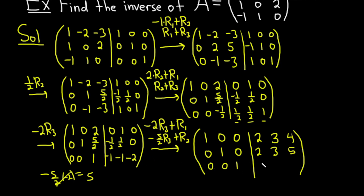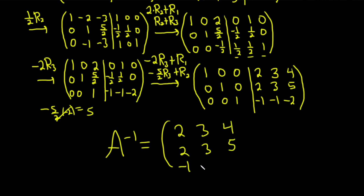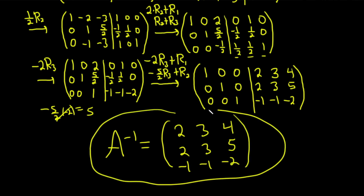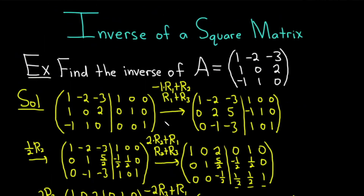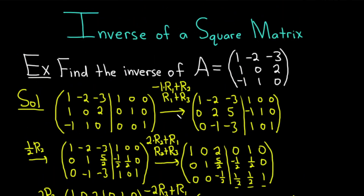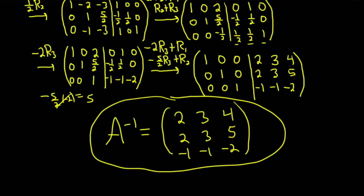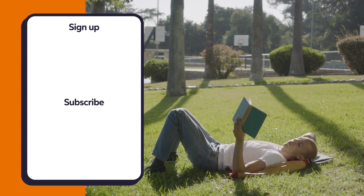We keep the bottom row: 0, 0, 1, negative 1, negative 1, negative 2. Whenever you're unsure, go to the side and do the computation — I did a lot of this in my head, but eventually you want to do all of it in your head. So the inverse A inverse is the matrix with entries 2, 3, 4, 2, 3, 5, negative 1, negative 1, negative 2. Really tough problem — this takes a ton of work. They just take a lot of practice, but once you do one or two on your own you do get better at it. Hopefully this video has helped you get better at finding the inverse of a square matrix. If you enjoyed this video, make sure to check out more videos on Chegg. Until next time, good luck. Bye.